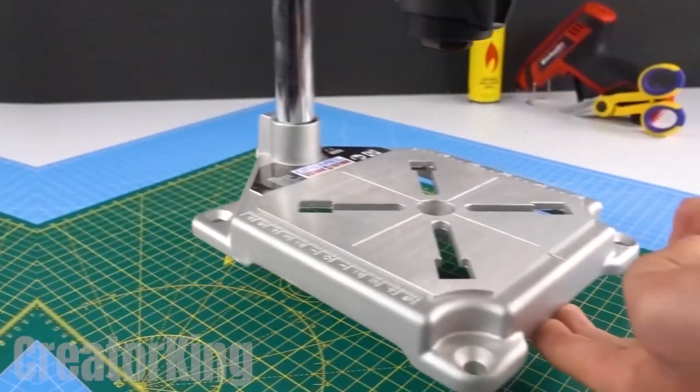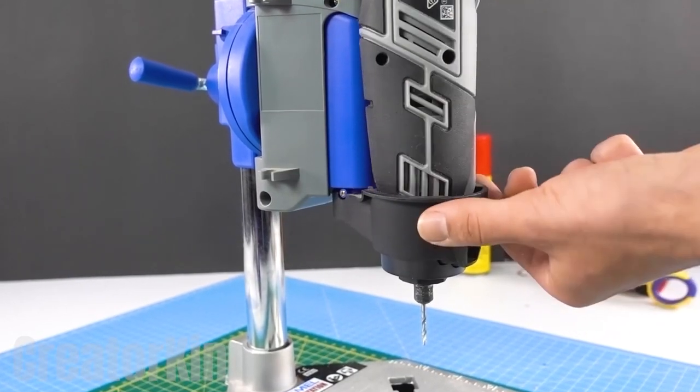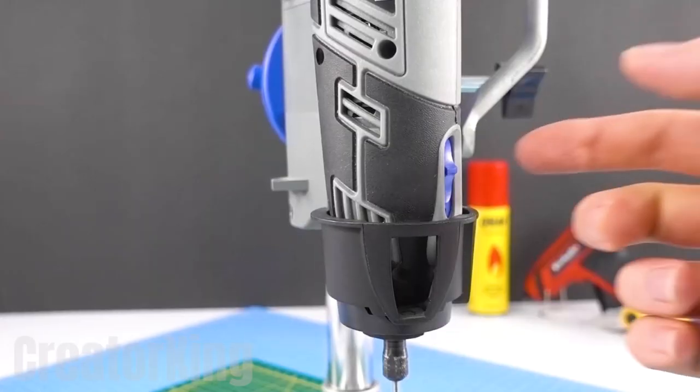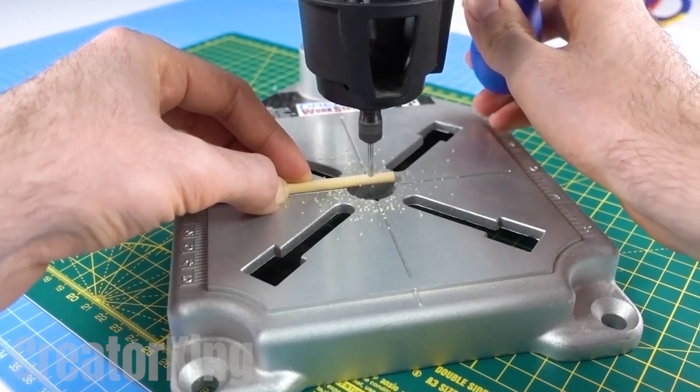Get one of these strange drill stands that I've never seen before in my life that help you drill holes more precisely. These tools are getting weirder and weirder. Pulling the lever downwards will allow us to pierce the wooden stick perfectly.